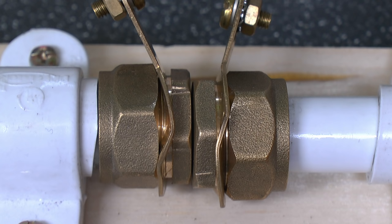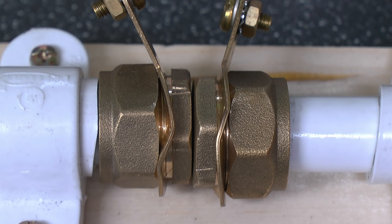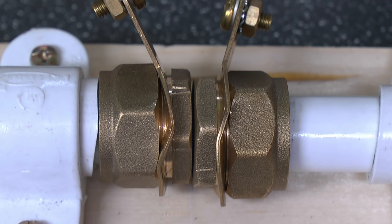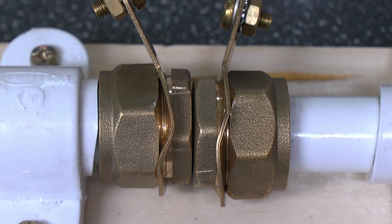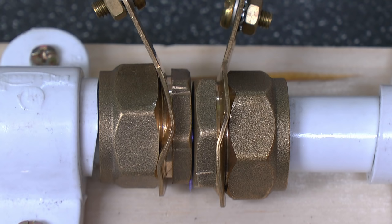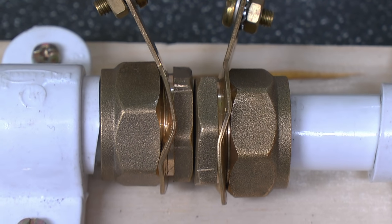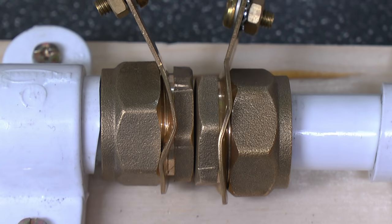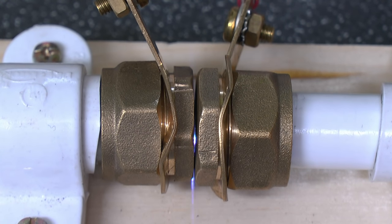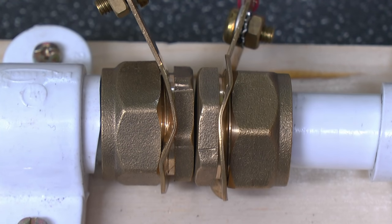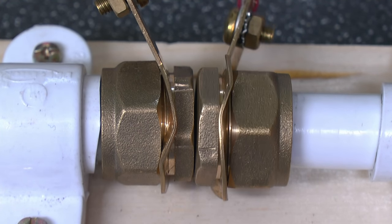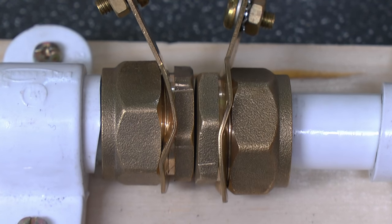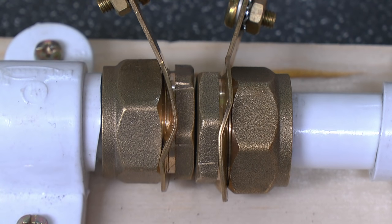So first of all then, the low setting, 2.2 amps. This is the medium setting, that's 4.2 amps. And then finally the high setting, which is around 8.3 amps.